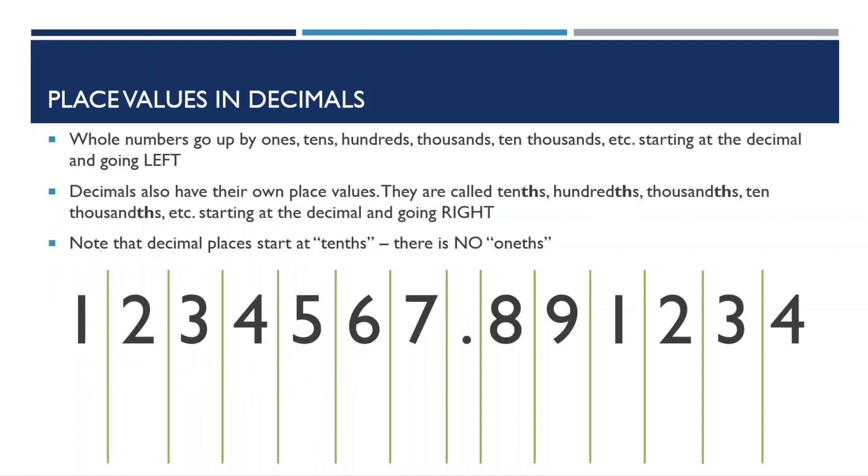Let's look at place values in decimals, which are the positions that the numbers are in. Whole numbers go up by ones, tens, hundreds, thousands, ten thousands, and so on, starting at the decimal point and going left.